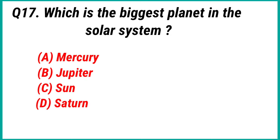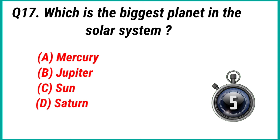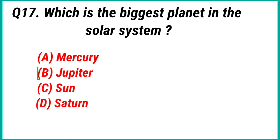Question 17: Which is the biggest planet in the solar system? Answer option B: Jupiter.